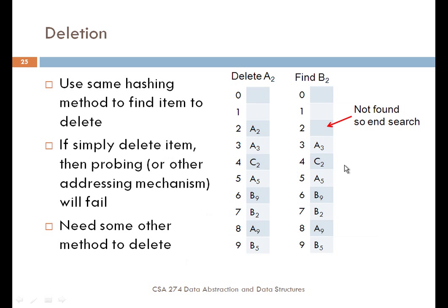If we simply delete the item from the array, you're going to end up having an error when using probing. Say I want to find B2 and I've deleted A2 — B2 is going to hash to that location, see that it's empty, and stop the search immediately. But we know B2 is actually in the array. So when we get to that location, we need some other way to mark it to say that this item was deleted, but there are other things in the chain that still have to be searched. We need some method other than simply deleting the element.